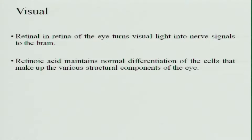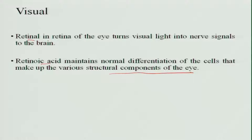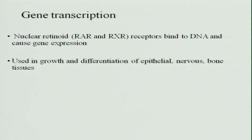Regarding the visual function of Vitamin A, retinol present in the retina of the eye converts visual light into nerve signals to the brain. Retinoic acid maintains normal differentiation of cells and makes up various structural components of the eye. Because of this conversion, dark adaptation to light occurs in human beings, which is deficient when there is a lesser amount of Vitamin A in the diet.